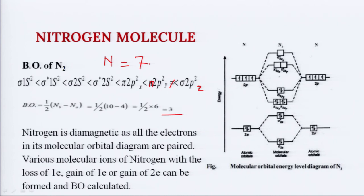Looking at the nitrogen MO diagram, we can see that all the electrons are paired — which means the molecule is diamagnetic in nature. So nitrogen is a diamagnetic molecule as all the electrons in its molecular orbital diagram are paired. Various molecular ions of nitrogen — with the loss of 1 electron, gain of 1 electron, or gain of 2 electrons — can also be formed and their bond orders calculated.